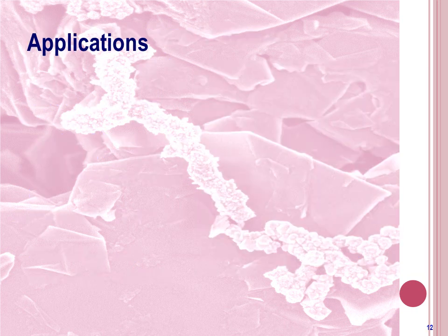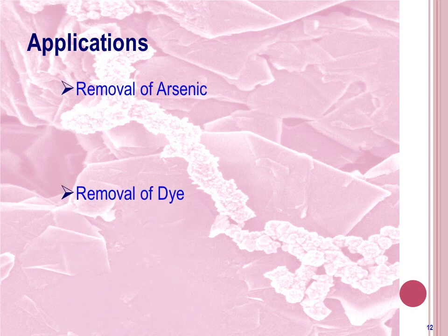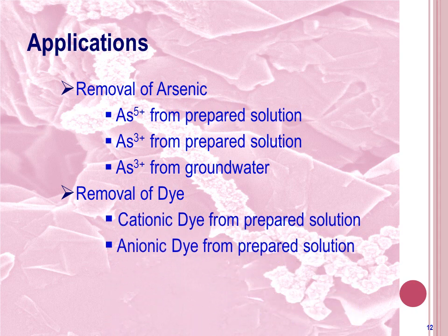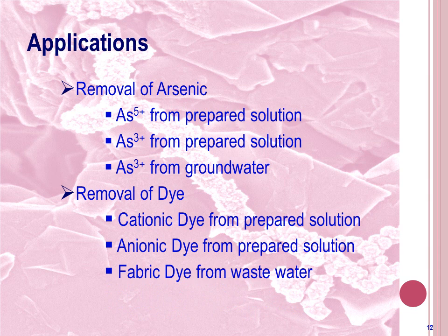After finishing the characterization of INP, let's come to the applications of INP. In our thesis work, we observed the application of INP for removal of arsenic and dye from water. The arsenic removal test was carried out for removing As³⁺, arsenate which is As⁵⁺, from prepared solutions, and natural arsenite from groundwater. In the dye removal test, both cationic and anionic dyes were removed from prepared solutions, and fabric dye was removed from industrial wastewater.